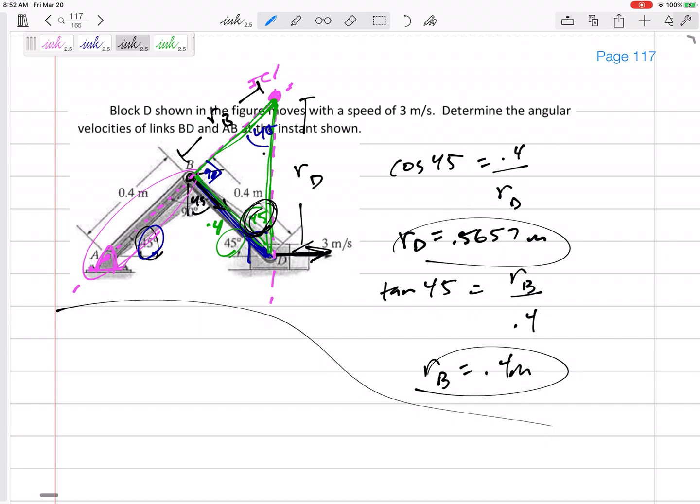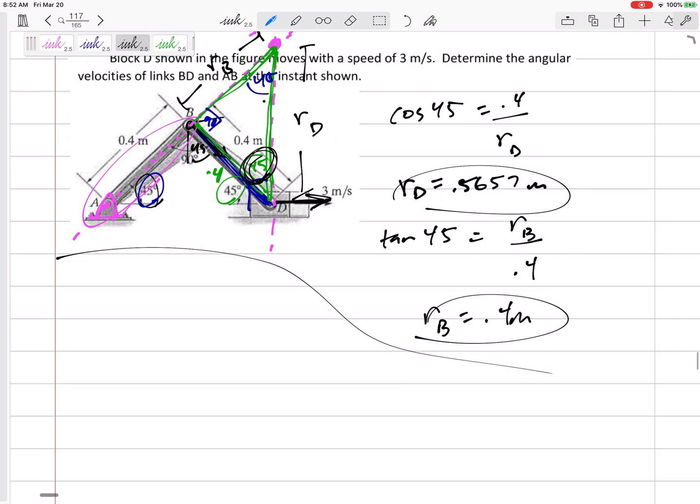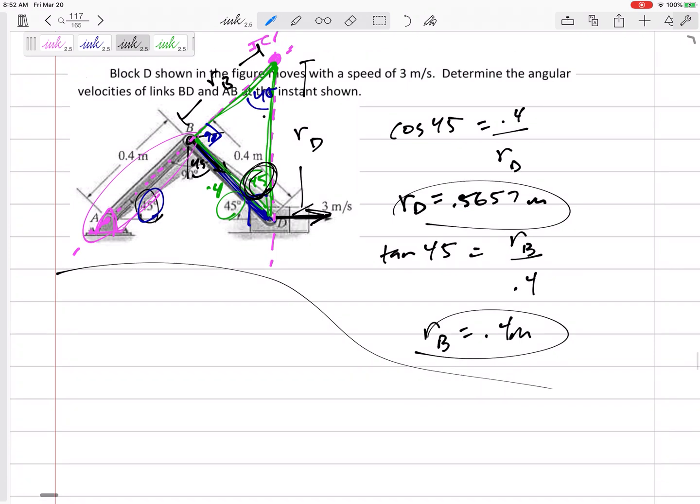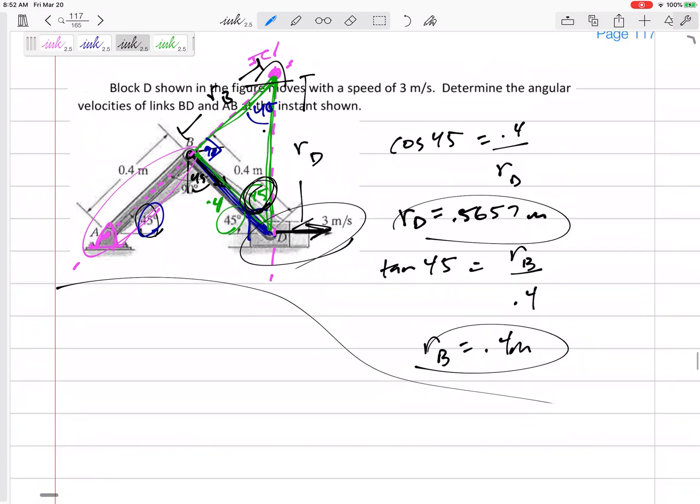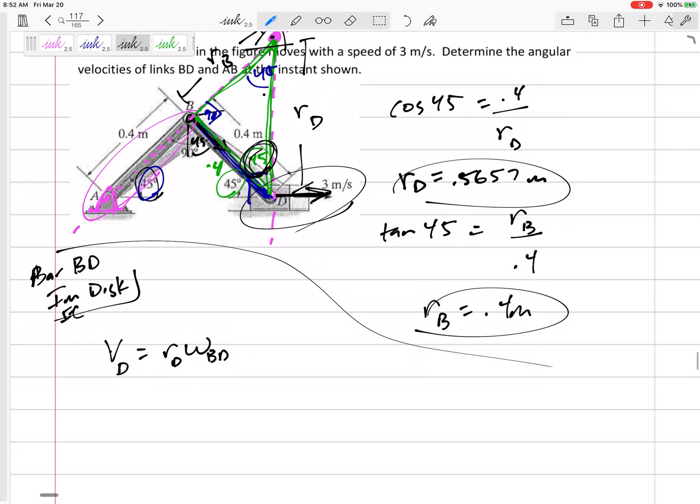And that was really just the prep work before we get into the main part of the problem, but that's the hardest part of the problem. Now, all we're using is V equals R omega. V equals R omega. But let's kind of see, where should we start? Well, let's start right here. It gave us that velocity of D right here. So I'm going to look at this imaginary disk. And the imaginary disk is what bar BD is, you know, glued onto at this instant. This is the instantaneous center. So I'm going to look at that disk, and I'm going to say V equals R omega. I'm going to say that VD, because I know D equals RD, omega of BD. So 3 is equal to 0.5657 omega BD.